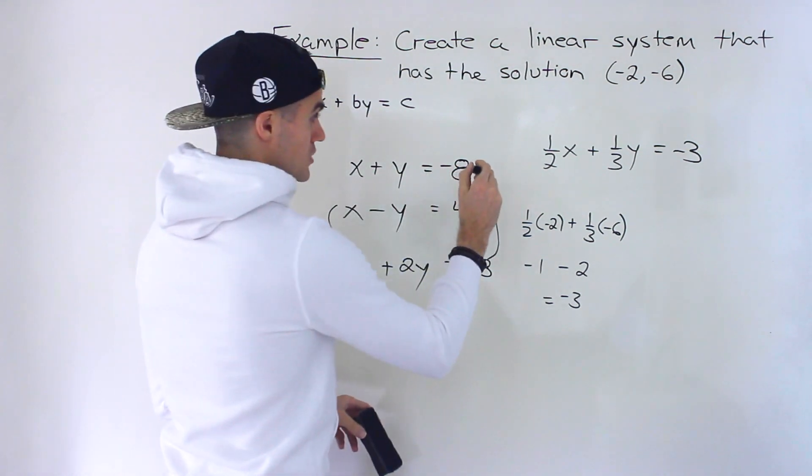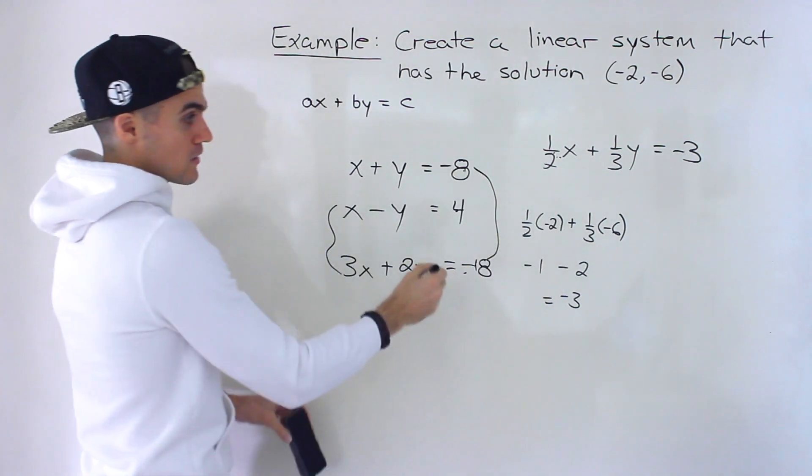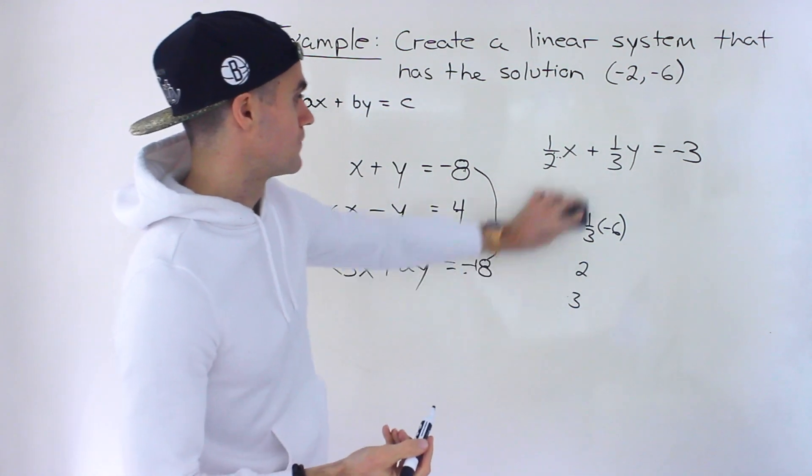So if you found the point of intersection between this and this, or this and this, or this and this, or this and this, you could just mix up these, you'd end up with negative 2, negative 6.